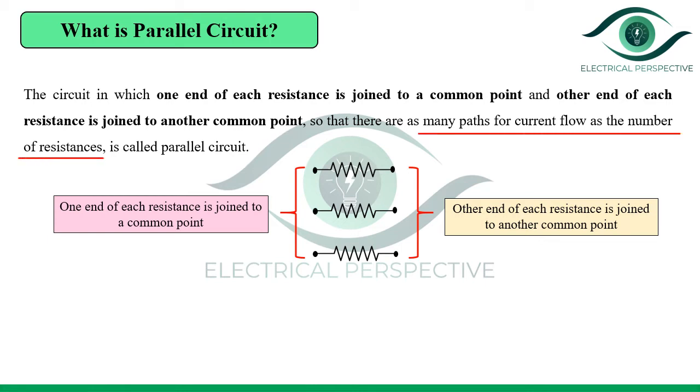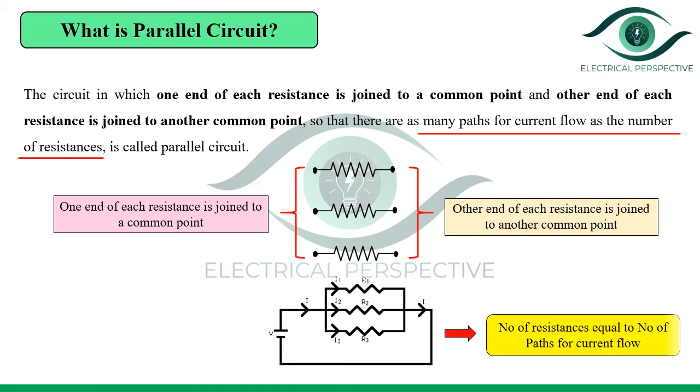Now when this circuit is connected to some supply, let's say a battery, then current will start flowing and this total current will split into different paths. The number of paths is equal to the number of resistances.